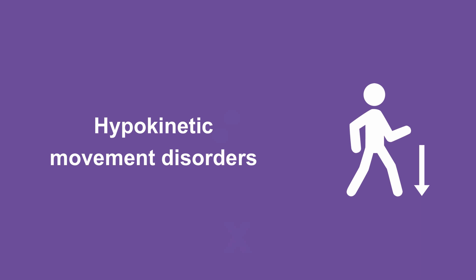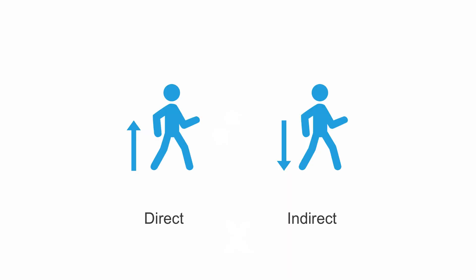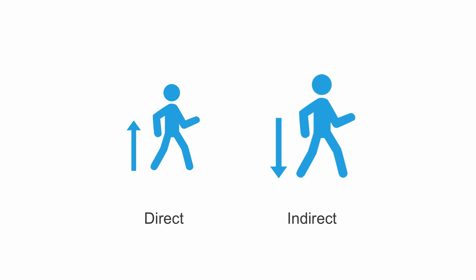The classic hypokinetic movement disorder is Parkinson's disease. It occurs as the result of a loss of dopamine-producing neurons in the substantia nigra of the midbrain. The indirect pathway generally results in decreased motor activity. With the loss of nigral dopamine, there is an excess of activity of the indirect pathway within the basal ganglia, resulting in excess globus pallidus interna activity.